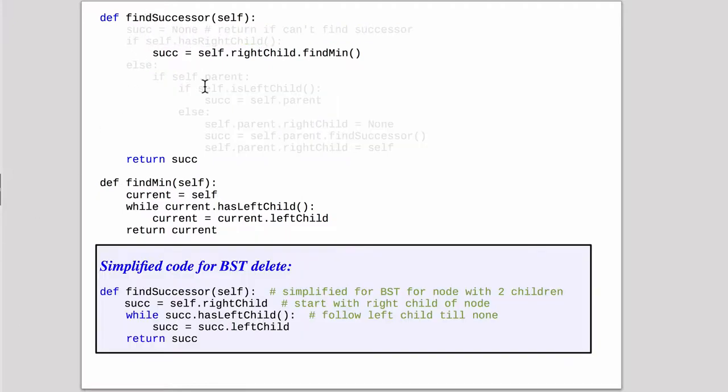So this shows you the original book code and I've grayed out everything you don't need. So basically when you find the successor of a node you basically go to the right child and find min. And find min starts at where we've started. So it starts itself which is the right child here.